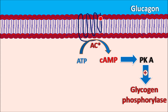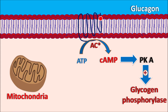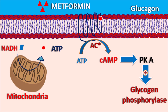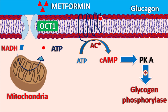Another target within the liver is the mitochondria. Within the mitochondria, oxidative phosphorylation takes place, and NADH is converted into ATP by complex I reactions. Metformin enters hepatic cells through OCT-1 (organic cation transporter 1) and inhibits complex I reactions, thereby inhibiting ATP production.